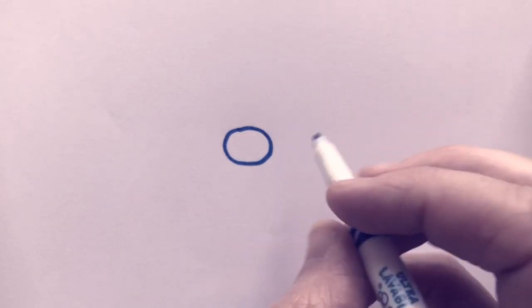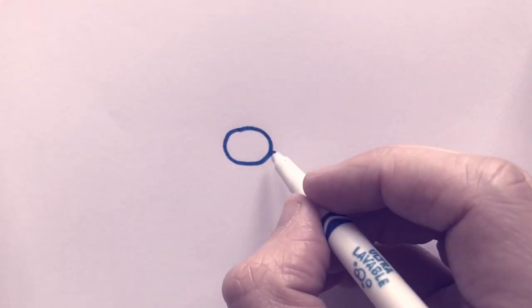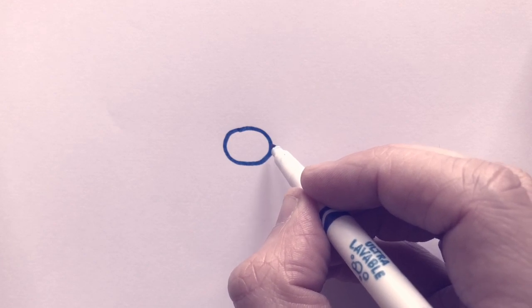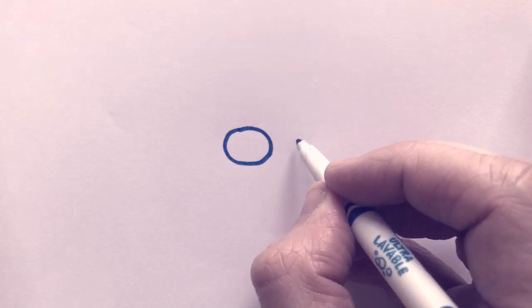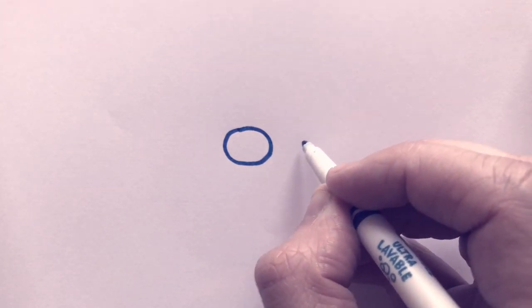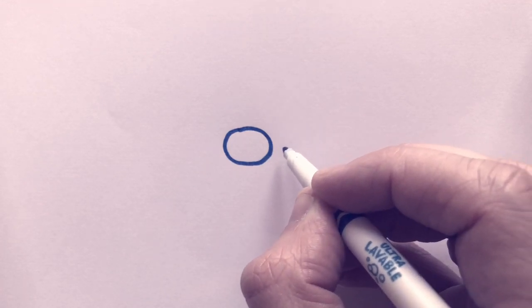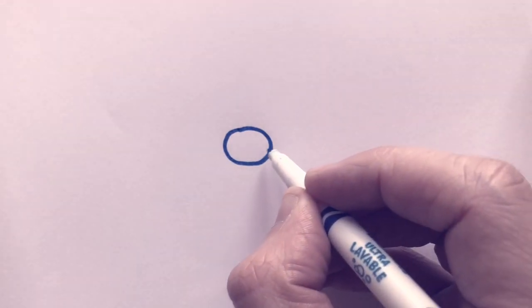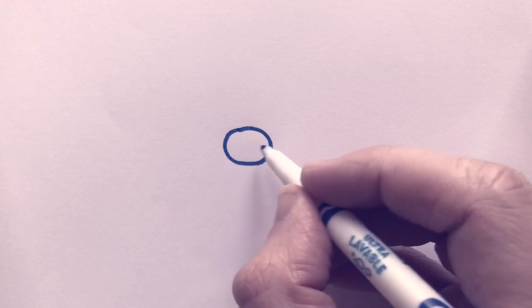Then we're going to start the mustache. So on the middle of the side, we're going to bring up a line that curves upward. It's a curved line that curves upward and it goes out almost the length of how big your oval is.